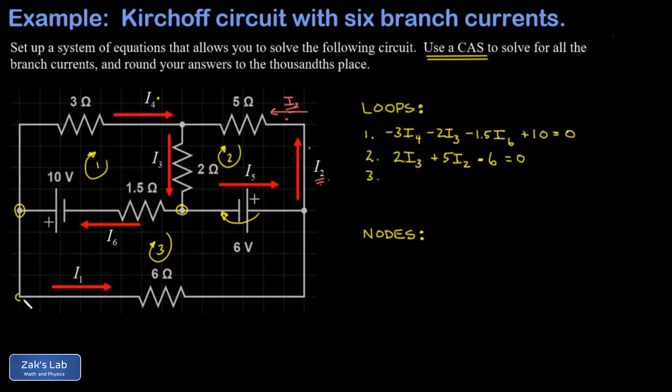My third and final loop. I'll start that at the lower left corner just to be consistent. And so I'm traveling this way. And the first thing I hit is this 10 volt power source. And I'm going from the high side to the low side. So that's a voltage decrease of 10 volts. Then I hit the 1.5 ohm resistor opposite to the direction of I6. So that's a voltage increase of plus 1.5 I6. Next, I'm going from the low side to the high side of that six volt power source. So that's a plus six volts. And then finally, I'm going through the six ohm resistor opposite to the direction of I1. So that's a voltage increase of plus six I1. And I have my final loop equation.